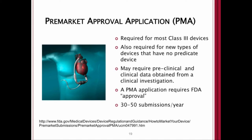Pre-market approval, or PMA, is required for most class three devices and also for new types of devices with no predicate device. It may require pre-clinical and clinical data obtained from a clinical investigation. A PMA application requires FDA approval — you submit the application, the FDA reviews, and there is an approval process. There are only roughly 30 to 50 PMA submissions per year because it is a very laborious, onerous process. There's a web link at the bottom for more information.